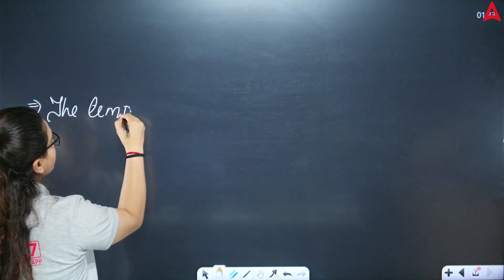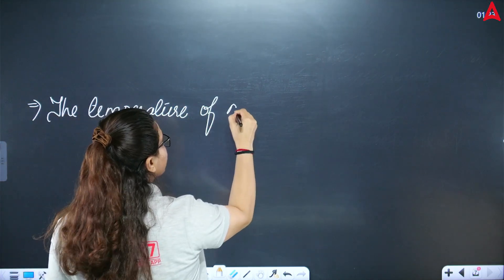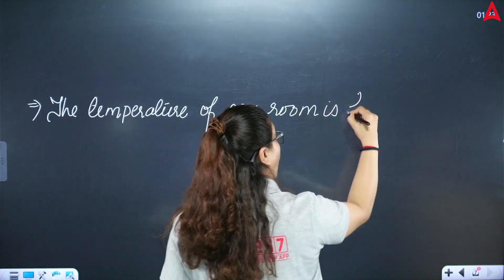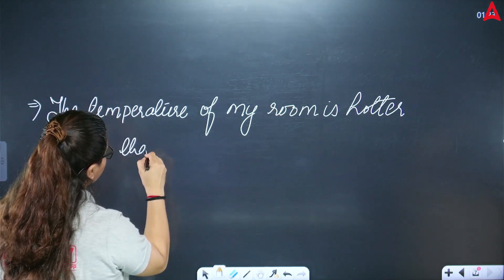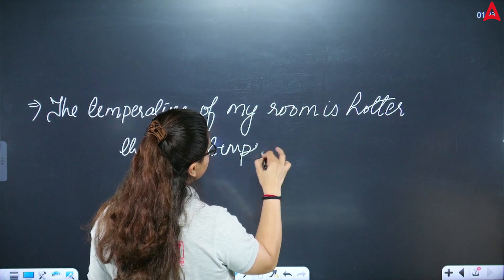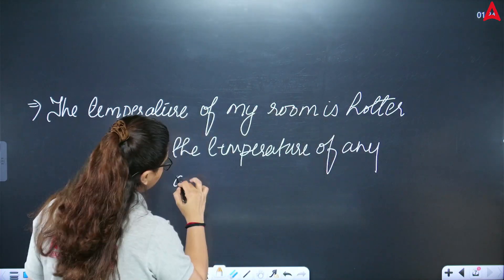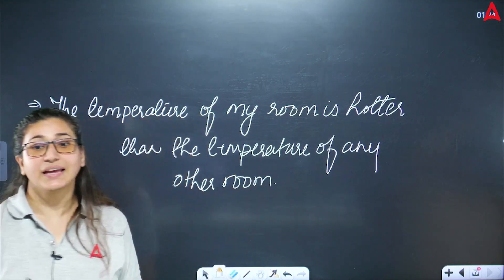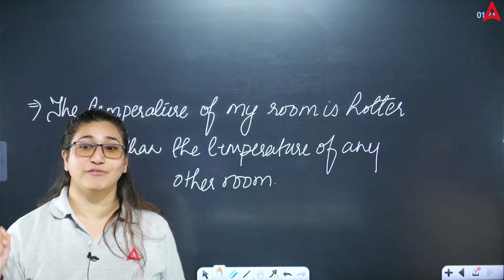Now here is your homework question. The sentence is: 'The temperature of my room is hotter than the temperature of any other room.' You need to apply the rule we just studied and send the correct answer in the comment section after watching the video.